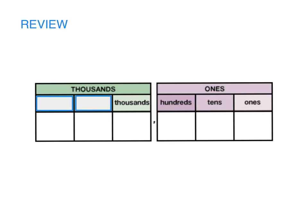You already know about place value through thousand. Remember, this comma separates the thousands from the hundreds. When you see that comma, that's when you say the word thousand.